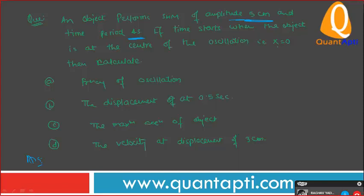If time starts when the object is at the center of the oscillation, X equals 0, then calculate frequency of oscillation. Frequency is given by 1 upon T, 1 upon 4, 0.25 hertz. Displacement given by X equals A sin omega T. Put the value T equals 0.5 second, you will get your answer. The maximum acceleration of the object is defined by A maximum omega square, omega square A. Very good.